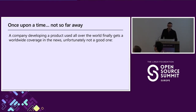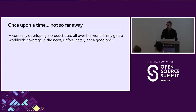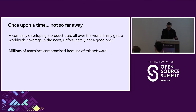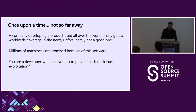Let's say you work for a company or an open source project — doesn't matter — you're building a product and it's used all over the world. It's open source, of course, and you get worldwide coverage in the news, but not for a good reason. Millions of machines get compromised because of a vulnerability in your software. You're a developer — what can you do to prevent that?